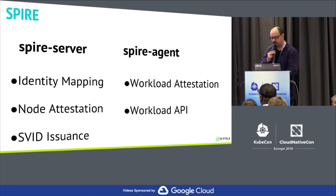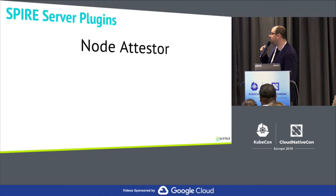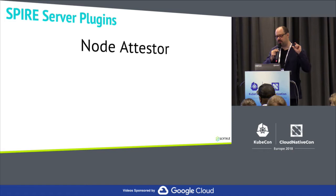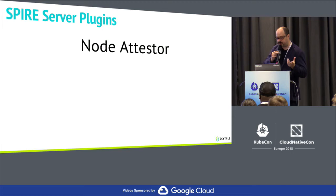I'll go over some of the plugins on each side. The first is the node attester, responsible for attesting the identity proof of a node. They work in conjunction with the node attester on the SPIRE agent — they come in pairs and are dependent on the environment you're running in. We have an AWS attester, a token attester, and Neil is going to show a Kerberos attester that he wrote.